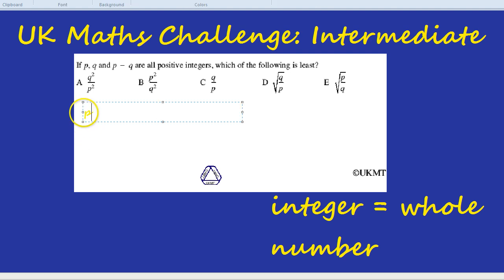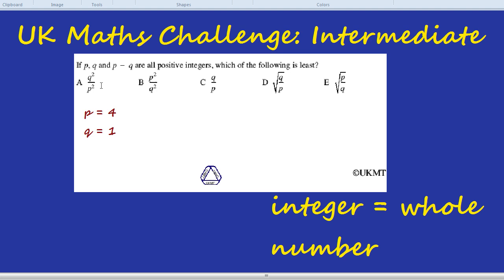So I'm going to pick P as being 4 and you cannot see that. So let's change the color. P as being 4 and Q as being 1. Now, we can see that P would have to be bigger than Q. That's the reason why I've chosen a bigger number for P compared to Q.